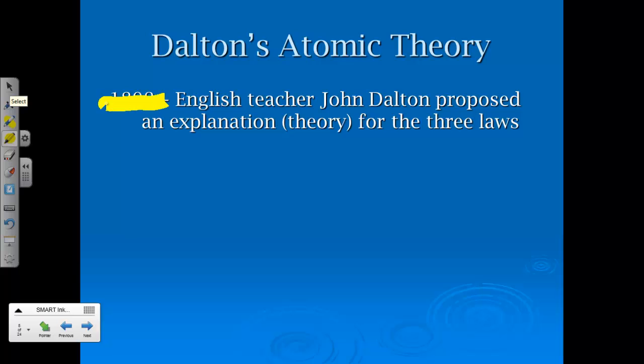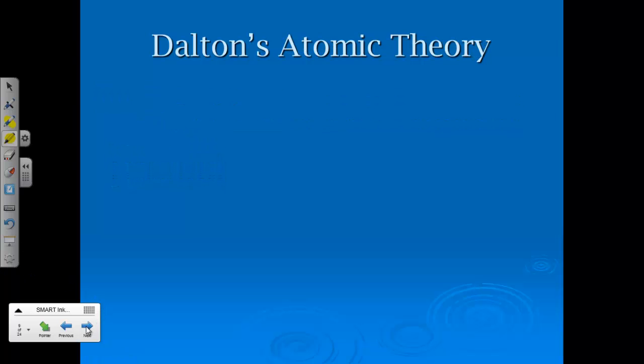All right, then we jump all the way to 1808, a very important individual from the chemistry perspective, and that's John Dalton. John Dalton came along and proposed an explanation, or a theory, for those three laws. And it's called the atomic theory. And there were five main ideas.